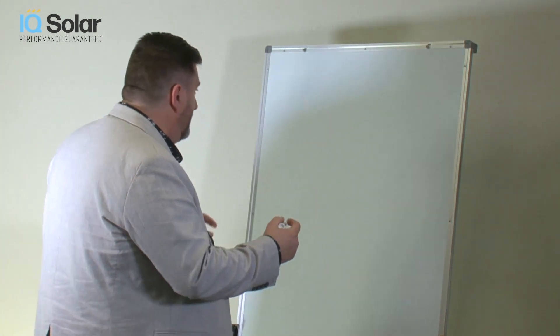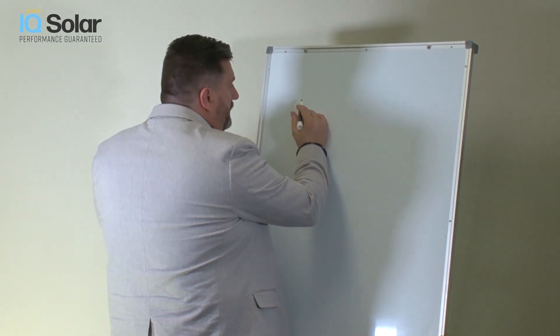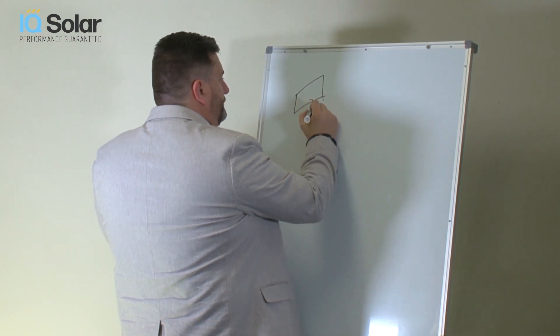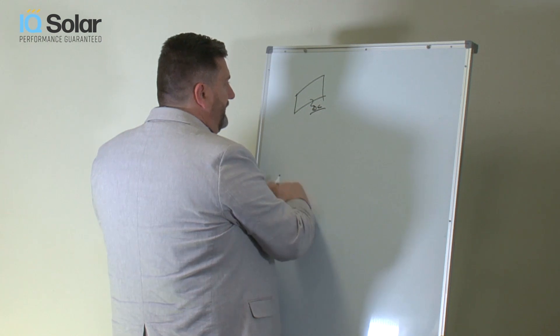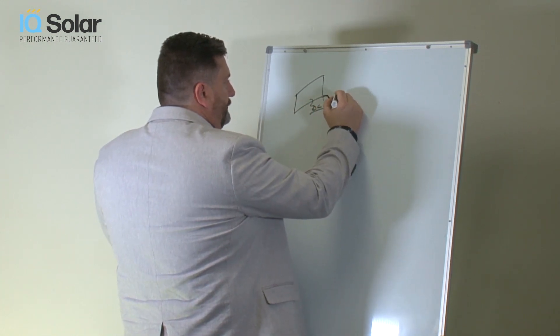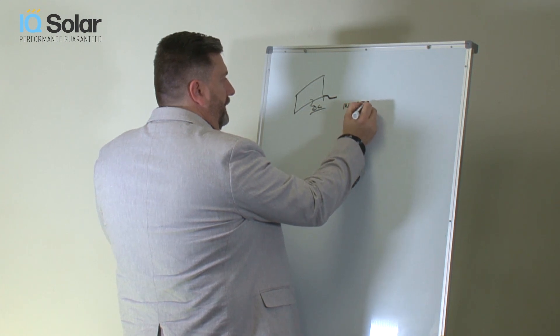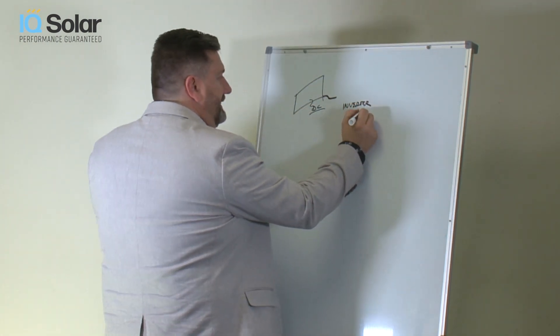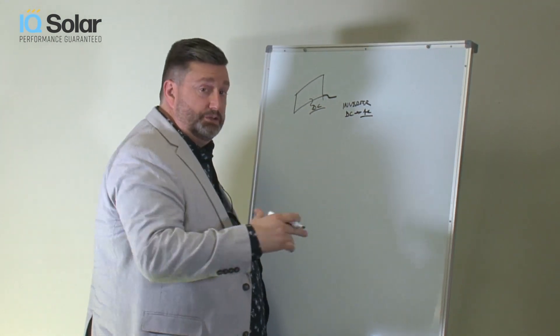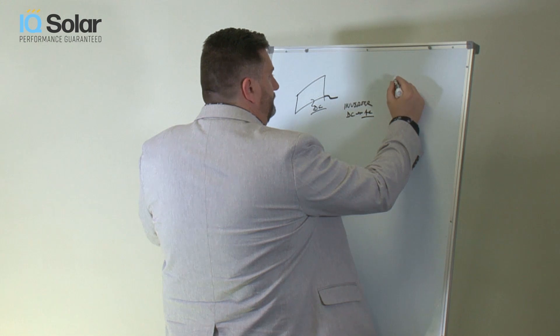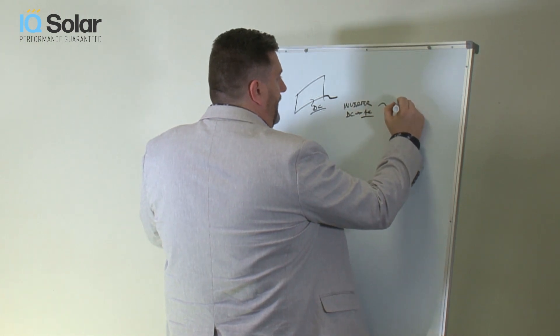Just to simplify, basically what is happening with a solar system is that you have panels. These produce DC electricity. These run to an inverter, which converts from DC to AC current. AC is what we use inside our houses, and then that goes into your supply.